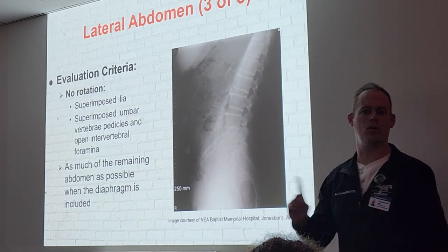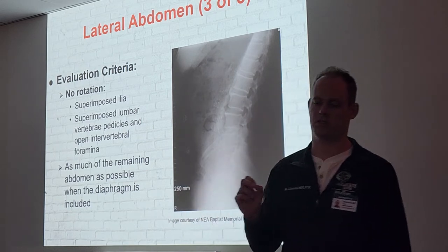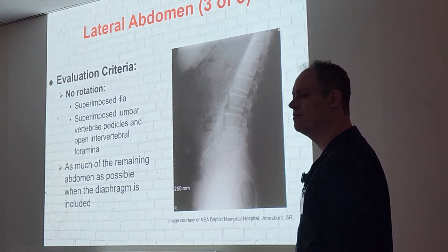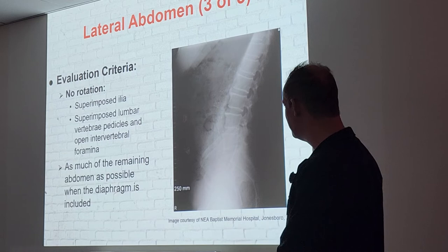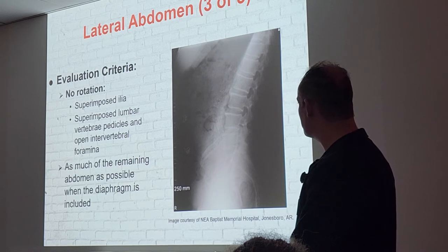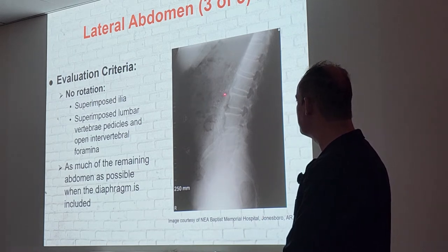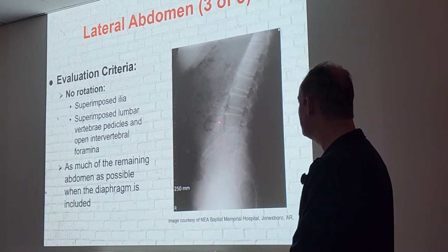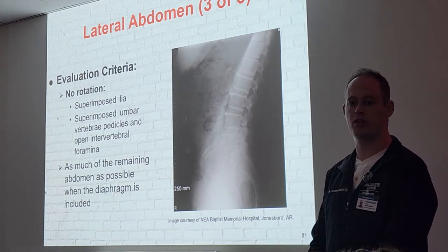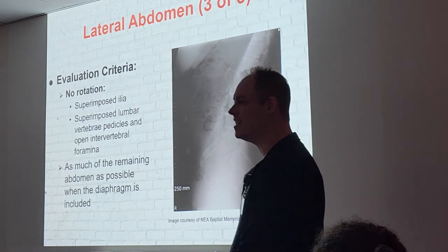For the regular lateral abdomen, you can do right or left — it does not matter, unlike the decubitus where we primarily do left laterals. Looking at this image, you can identify what appears to be a stent — a device used when there is narrowing of the veins and arteries for patients with blood flow issues, often cardiac patients.